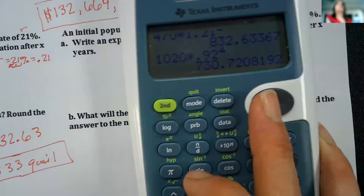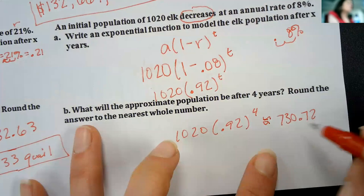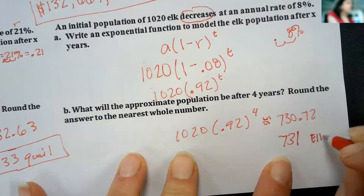Plug it in, I get 730.72. Which says round to nearest whole number again, so we have 731 elk.